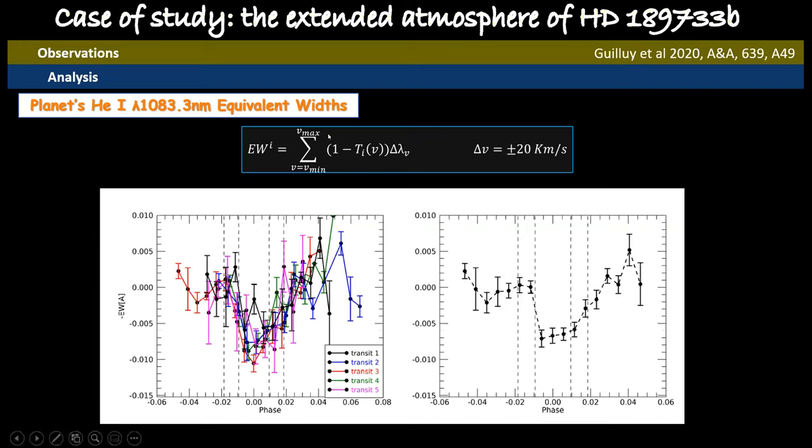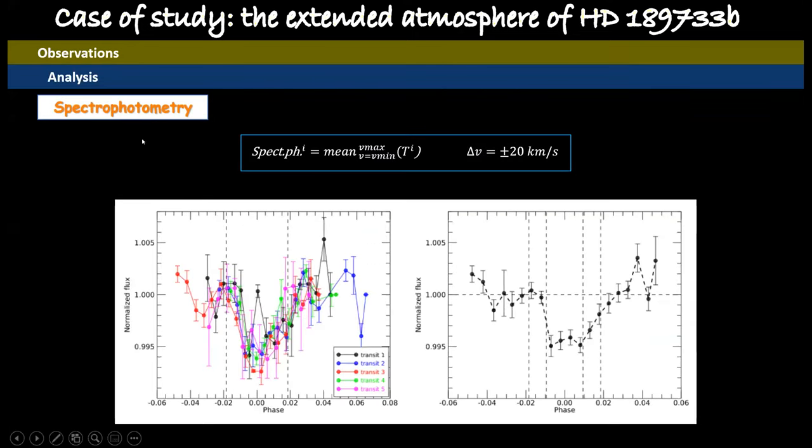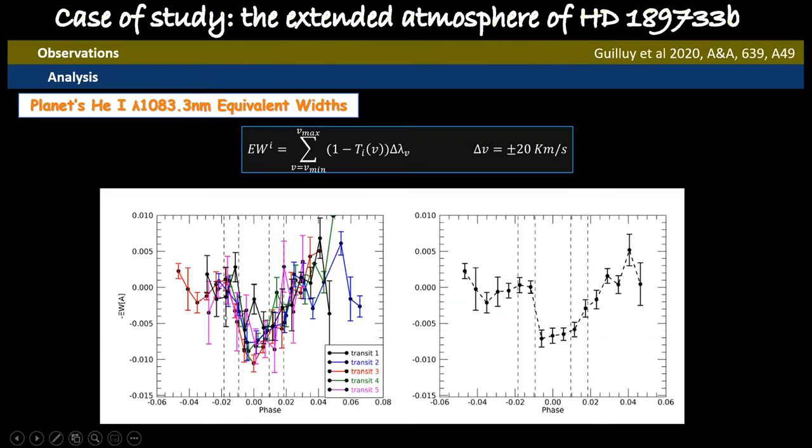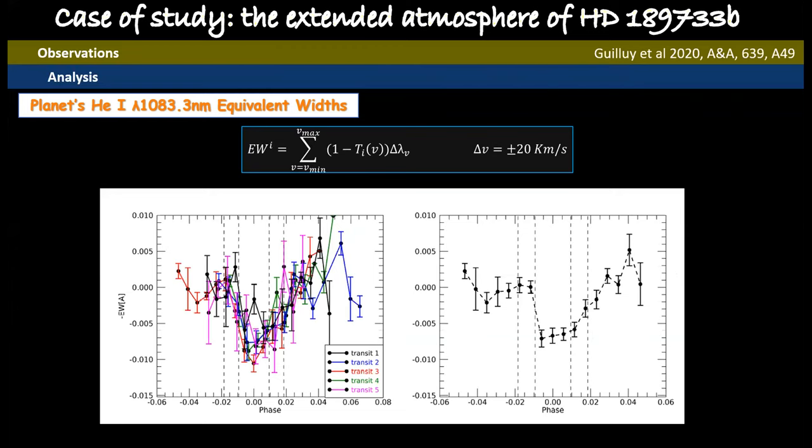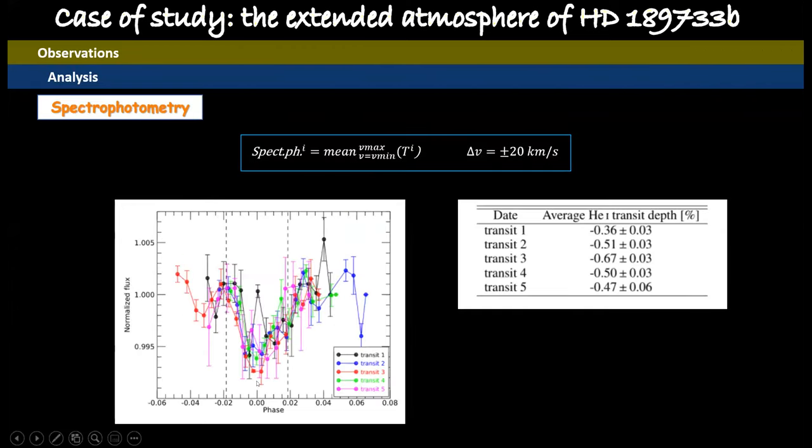And one technique is the equivalent width calculation. And this is the results for the single nights taken individually. These are all the nights taken together. And this is the results for the light curve calculation or called also spectrophotometry. The two techniques are in agreement. And as you can see, both from this technique and from this technique, there is a strong stellar variability between the different nights.